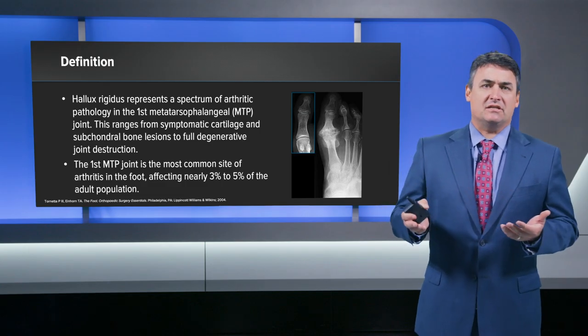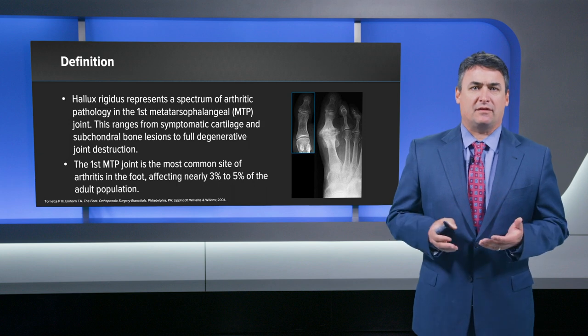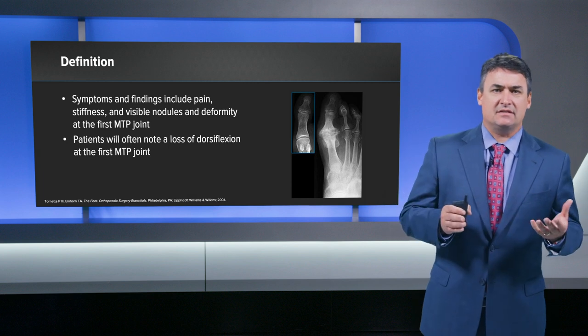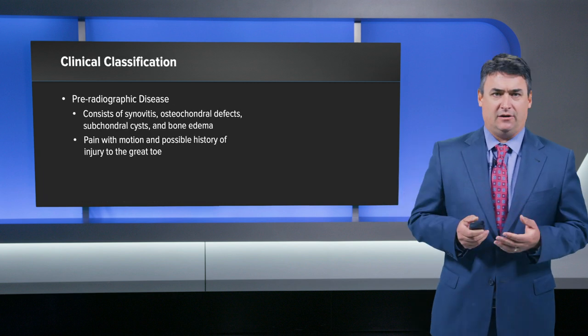Hallux Rigidus represents a spectrum of arthritic pathology of the first metatarsal phalangeal joint, the first MTP joint. This ranges from symptomatic cartilage loss to subchondral bone lesions to full-blown degenerative joint destruction. The first MTP joint is the most common site of arthritis in the foot, affecting about three to five percent of the adult population. Symptoms include pain, stiffness, a visible nodule or bone deformity, and loss of dorsiflexion at the first MTP joint.